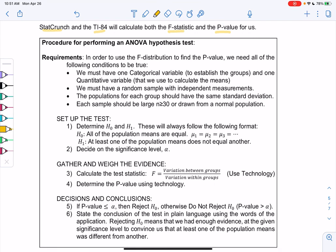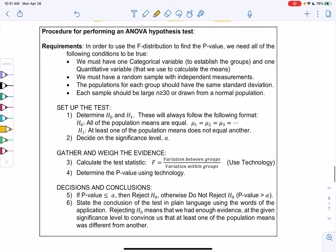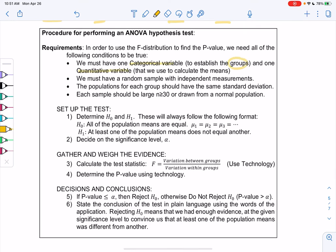So the procedure for the F-distribution, the requirements are really tricky, so I'll go over them. We'll have one categorical variable, that's my groups, and then it has to be a numerical variable because we're doing means. We have to be random with independent measurements. Each sample should have the same or close standard deviation. And same thing as always, we need a large enough sample or we need normal. Cutoff is 30 again because we're looking at means.